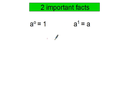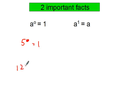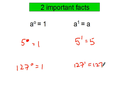Two things that come up in different parts of the exam are these facts: anything other than 0 to the power of 0 is 1, and anything to the power of 1 is just the number itself. So 5 to the power of 0 equals 1, and 7 to the power of 0 is 1. If you have 5 to the power of 1, that's 5, and 127 to the power of 1 is just 127.